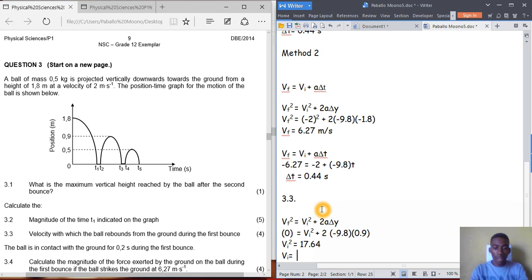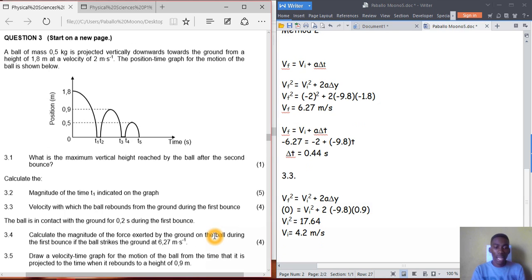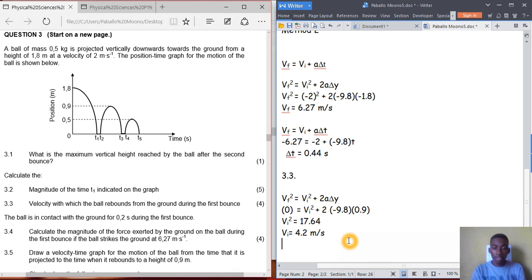Initial velocity equals the root of 17.64, which is 4.2 meters per second. So this is the answer.